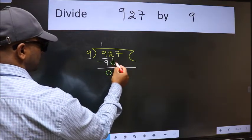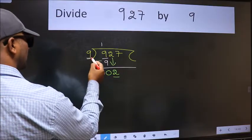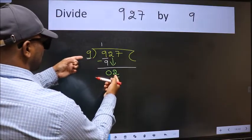After this, bring down the next number 2. Now, here we have 2 and here 9. 2 is smaller than 9.